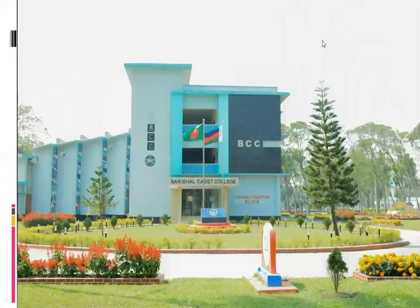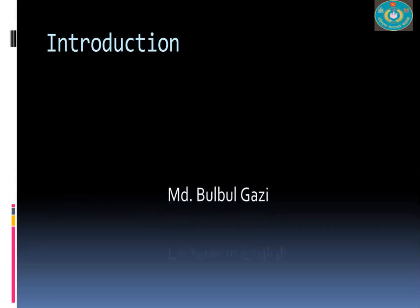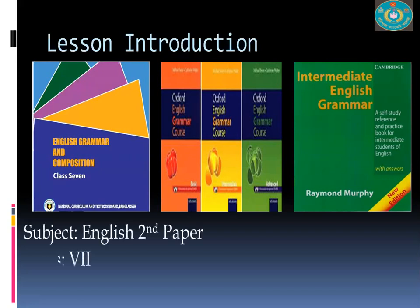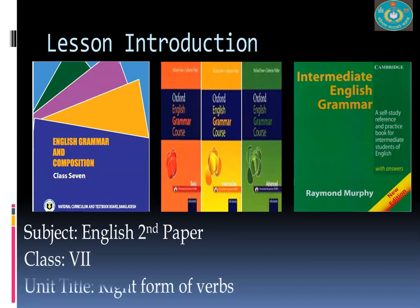My dearest scholars, without any more delay, I'm moving into today's lesson. I'm your Bulbul Gajisar, lecturer in English, Burshal Catholic College. While preparing this lesson, I consulted mainly three books: your English grammar and composition prescribed by the National Curriculum and Textbook Board, Oxford English Grammar Course with three levels — basic, intermediate, and advanced — and Intermediate English Grammar by Raymond Murphy. This class is meant for Class 7 cadets, and the unit is right form of verbs.